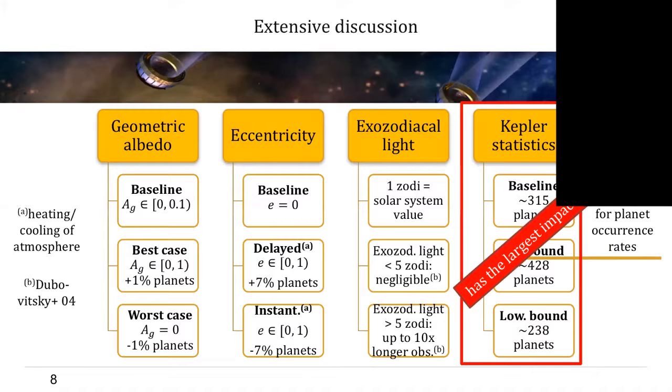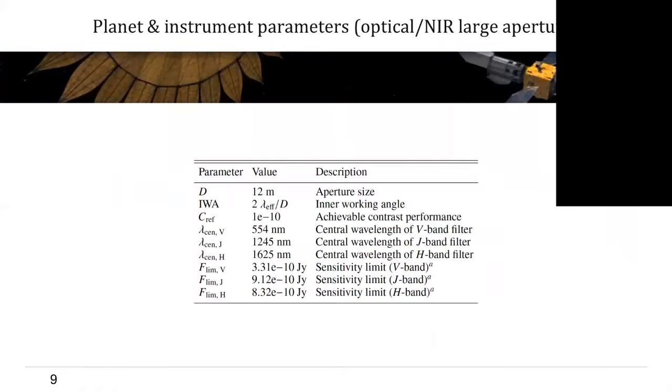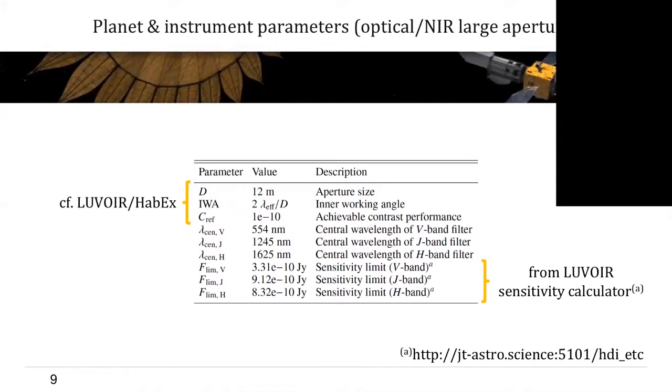Now detecting more than 300 planets with the mid-infrared interferometer seems very tempting, but the question is how would the alternative mission concept perform? So here are our assumptions for the optical near-infrared large aperture mission. We assume a 12-meter primary mirror, 2 lambda over D for the inner working angle of the coronagraph, and an achievable contrast performance of 10 to the minus 10. And again, we simulate observations in three bands, for which we get some sensitivity from the LUVOIR sensitivity calculator. Now on top of that, of course, we have to increase the geometric albedo significantly because we now look into the reflected host star light of the exoplanets.